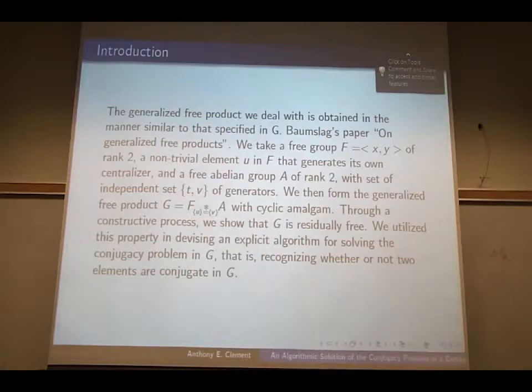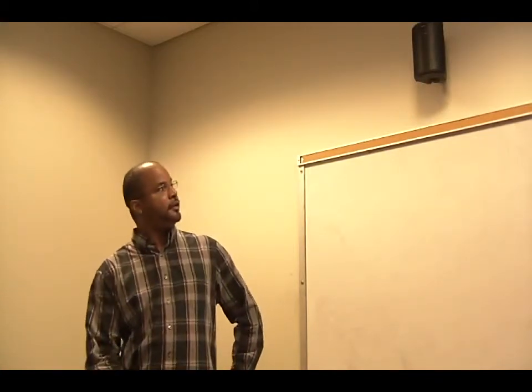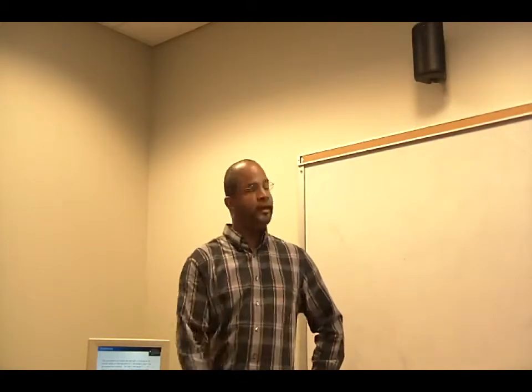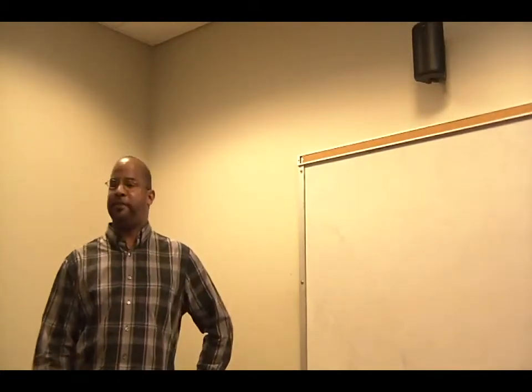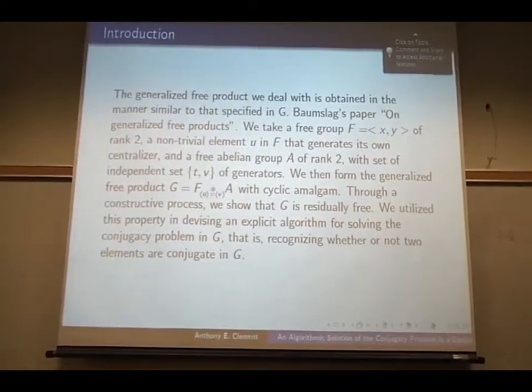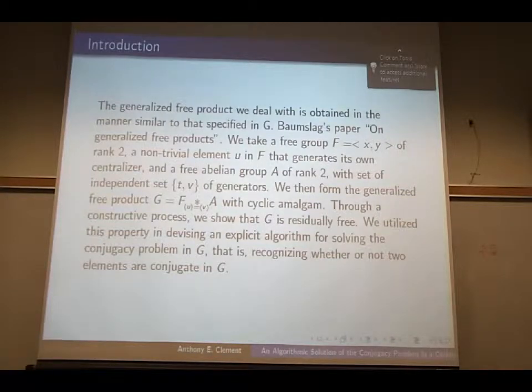So here is it. I mean, in a nutshell, we have a generalized free product, and the generalized free product we deal with is obtained in a similar manner to that specified in Gilbert's paper. So we have a free group on two generators, rank two, a non-trivial element in the free group, U, that generates its own centralizer. And we have a free abelian group A of rank two, with an independent set, T, V, of generators, and then we form the generalized free product. And through a constructive process, we'll show that G is residually free, and we'll utilize this property in devising an explicit algorithm for solving the conjugacy problem in G. That is, recognizing when two elements are conjugated in G.